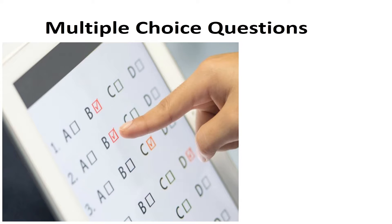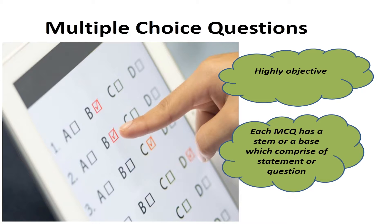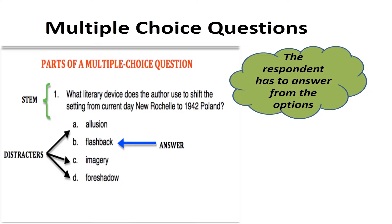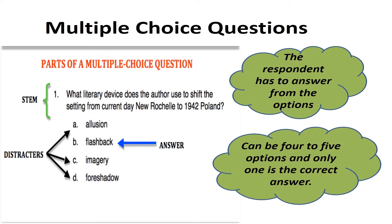The next type of questions are multiple-choice questions. These type of questions are highly objective. Each question has a stem or a base which comprises of a statement or a question. The respondent has to answer from these options. There can be four to five options, but there is only one correct answer.